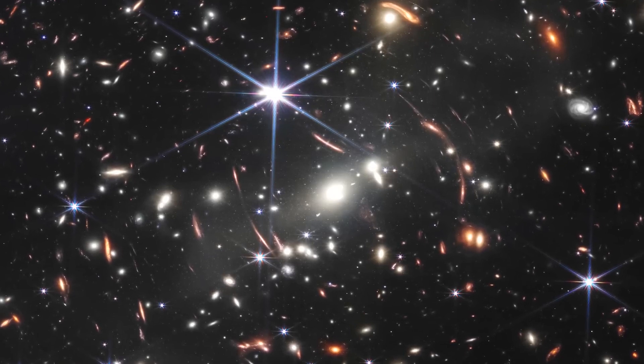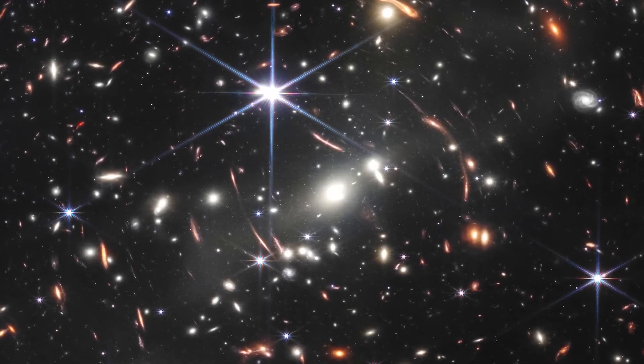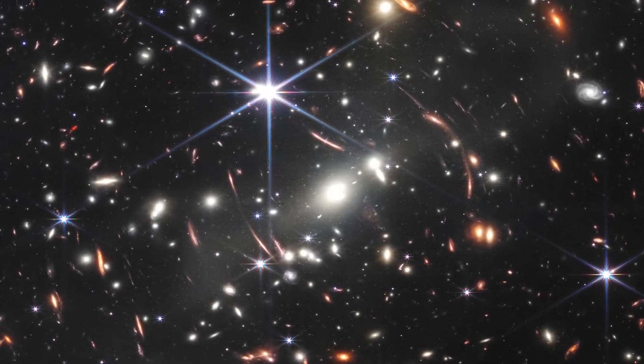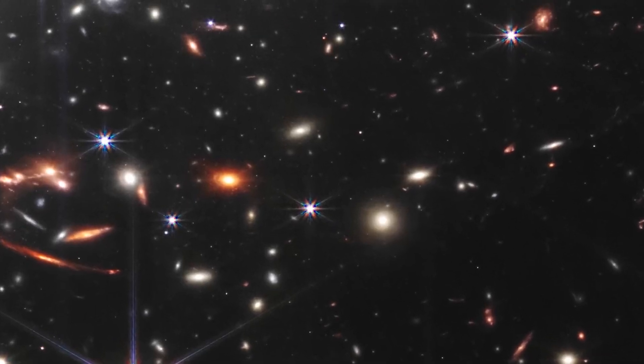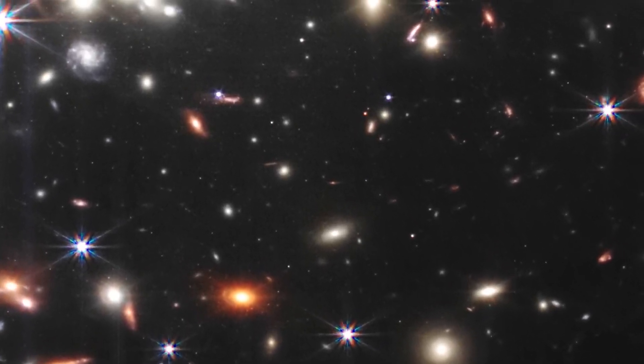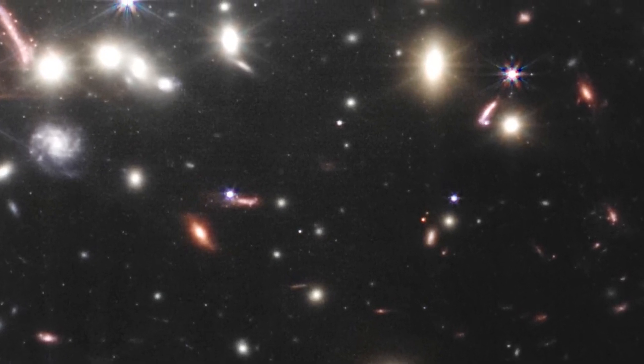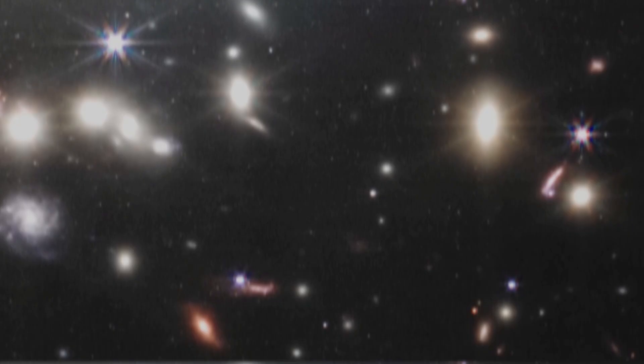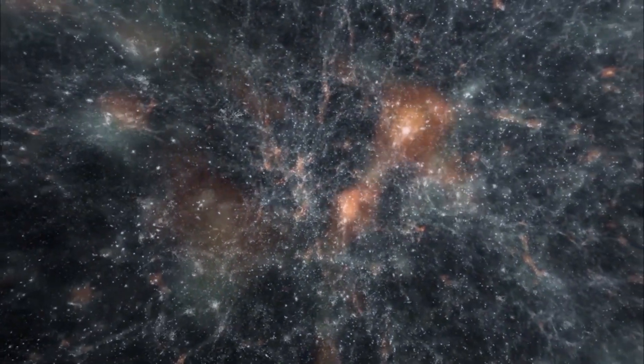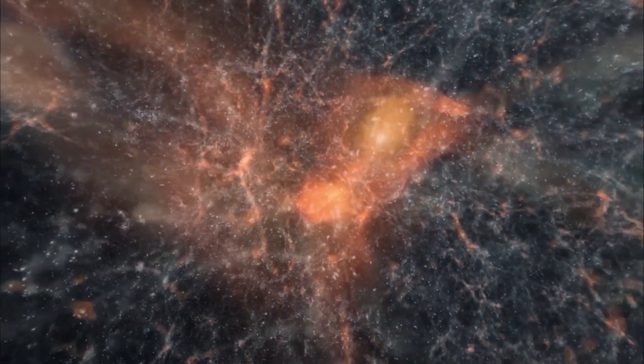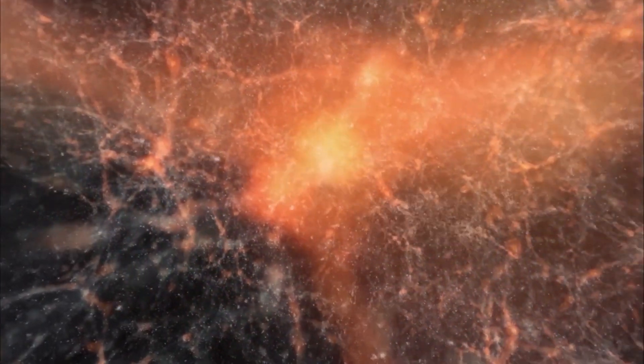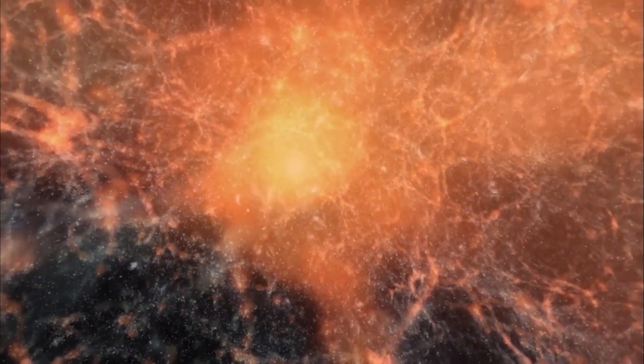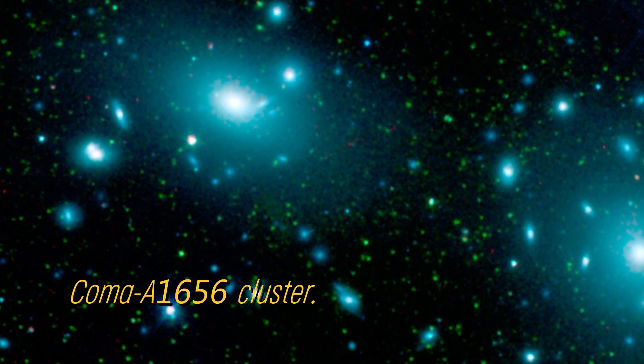The James Webb Telescope findings challenge what we thought we knew about the Big Bang, leaving scientists at a crossroads. Despite this, NASA recently tweeted about a galaxy cluster that lies just 650 million years after the Big Bang, adding another intriguing piece to the puzzle. Astronomers have analyzed the data and concluded that this fledgling cluster is expected to grow in size and become something similar to the colossal COMA A1656 cluster.